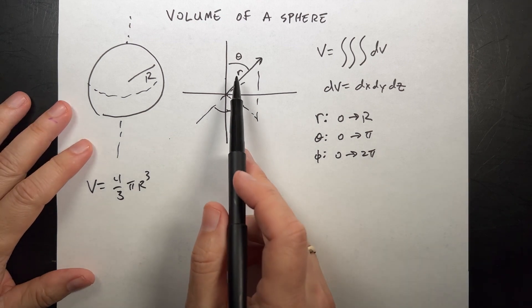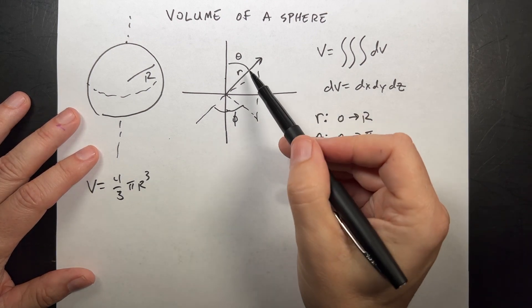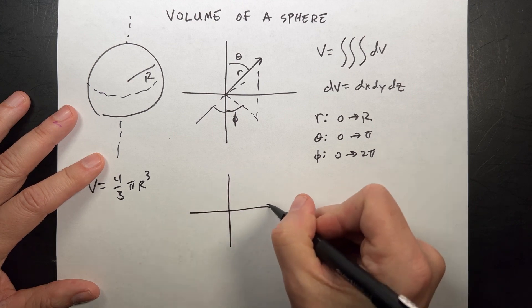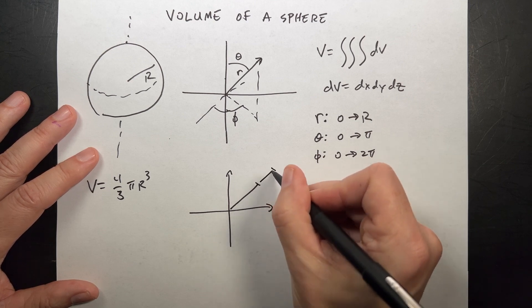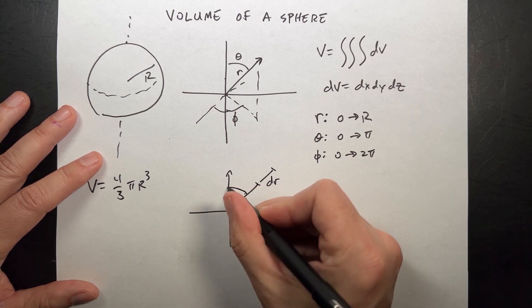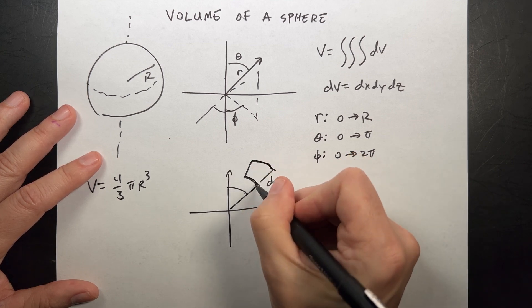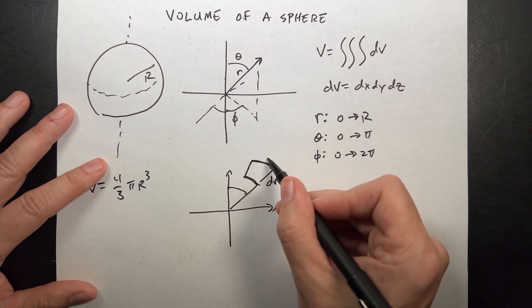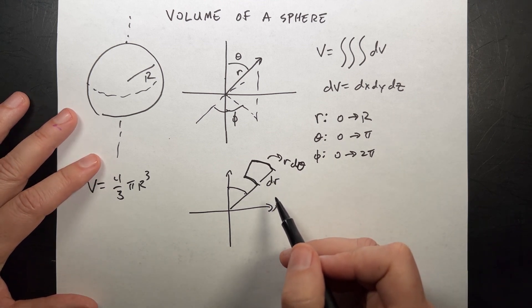Let's look at what the volume element is. Imagine letting a small region expand a little in the r, theta, and phi directions to make a box. Looking from the side in the x-z plane, if I go in the r direction that's a distance dr. If I go in the theta direction, the arc length is not dθ — because dθ is not a distance — it depends on how far away you are. So it's actually r dθ. The area element in polar coordinates is r dr dθ.